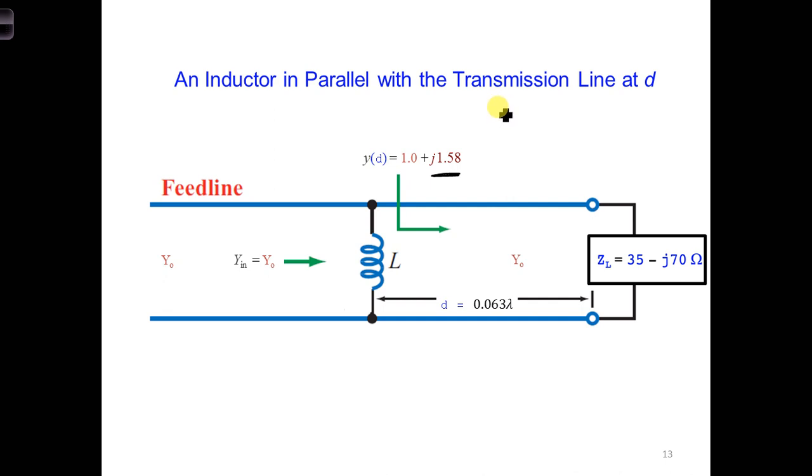We're dividing here because we're dealing with an admittance instead of an impedance. So with admittances, we multiply by Z naught to normalize. So I would take a capital Y and multiply by Z naught in order to normalize and plot on the Smith chart. And then I would take a little y and divide by Z naught in order to denormalize and take a value off of the Smith chart.